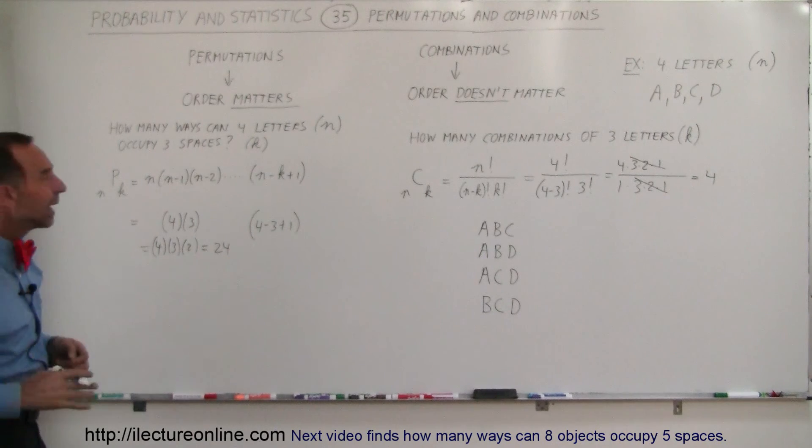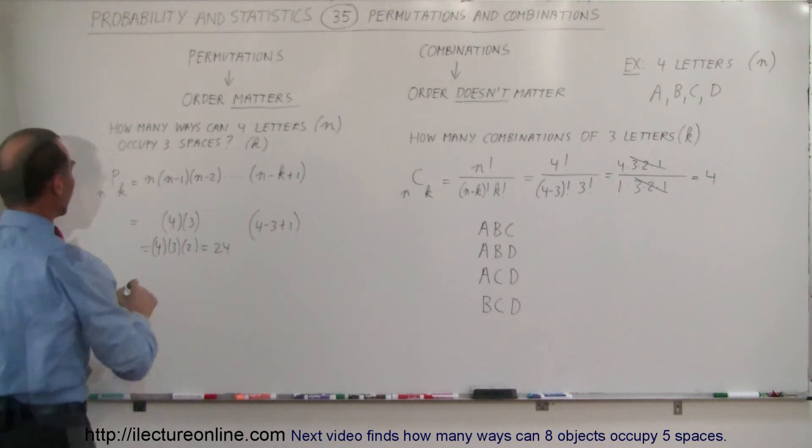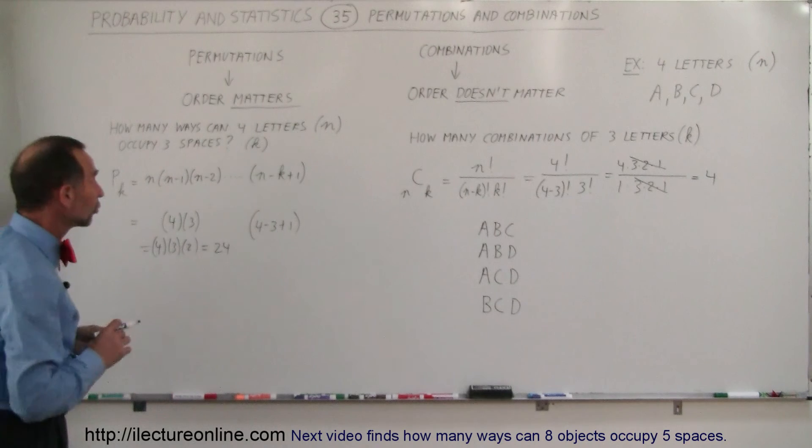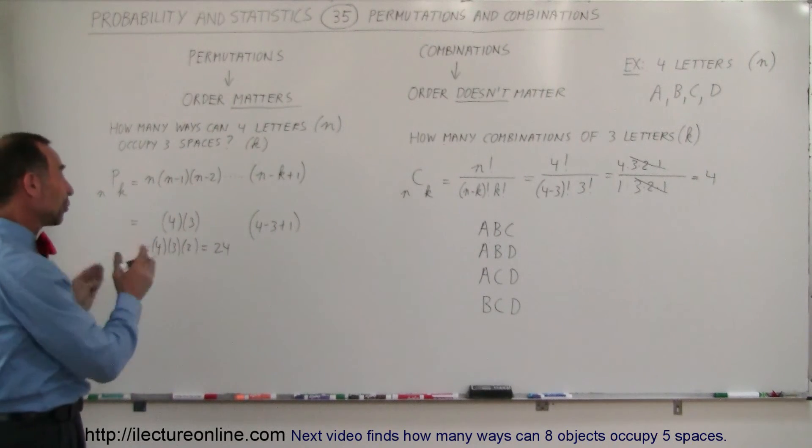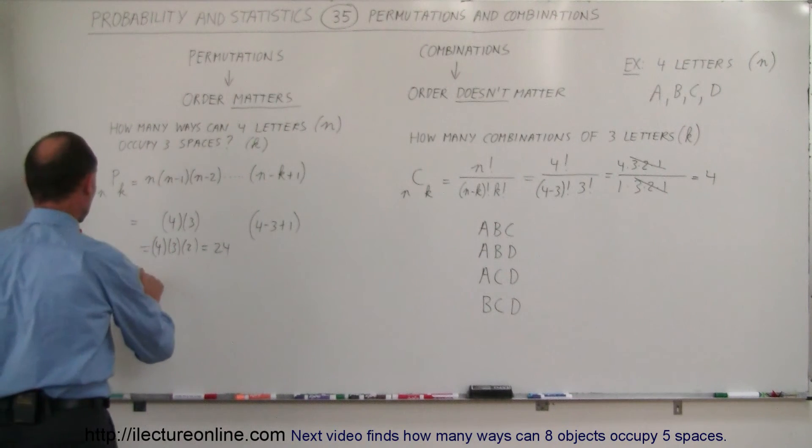Let's see if we can do it by hand and see if we can figure out what they are. We know there's 24 solutions here, let's see if we can figure out what those 24 solutions are. We have 4 possible letters, 3 possible spaces. So, let's start out with, we have A, B and C, A, B and D, A, C and B.